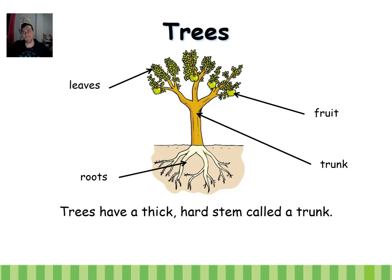Let's talk about the trees. All plants have the same four parts: the leaves, the roots, and the stem — which in trees is called the trunk. The trunk is the stem.